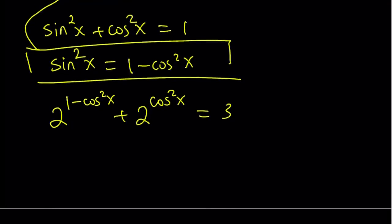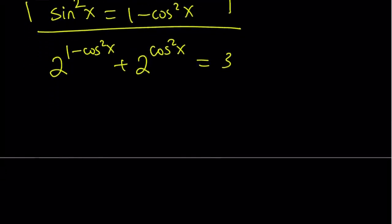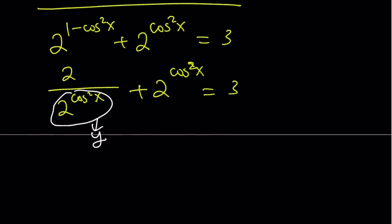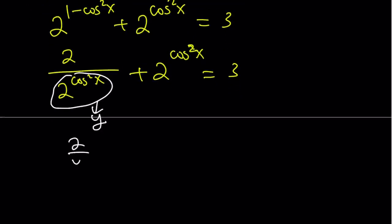Alrighty? Okay, great. So now we can go ahead and write the 2 to the power 1 minus cosine squared as 2 divided by 2 to the power cosine squared x. And this is just as is. Same one. And now notice that 2 to the power cosine squared x is repeating. So I can basically use substitution here. Let's go for example, you know why we're doing this. 2 over y plus y is equal to 3.